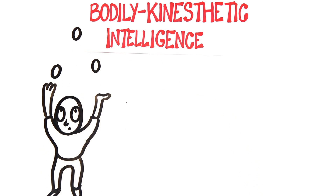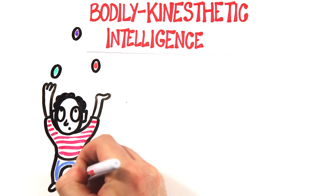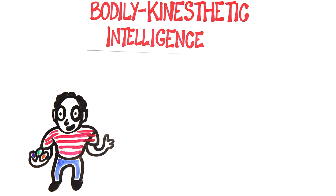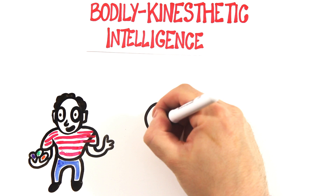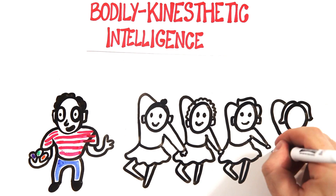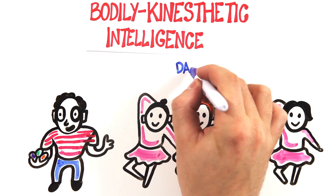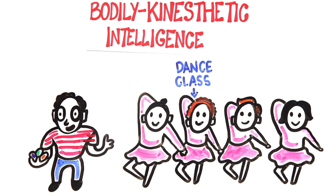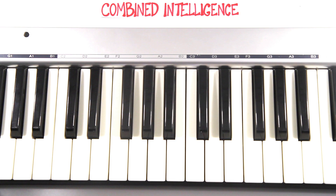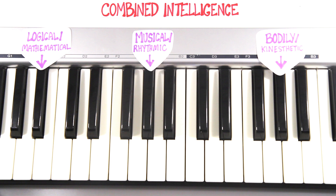Not all intelligences can be measured. For example, bodily kinesthetic intelligence — the capacity to handle objects skillfully — is difficult to tease apart. A study of four-year-olds at a ballet class couldn't assess rhythm effectively because some had already taken classes before or danced at home, creating predisposed knowledge. As well, many tests require a combination of many types of intelligences, so it's hard to study just one.